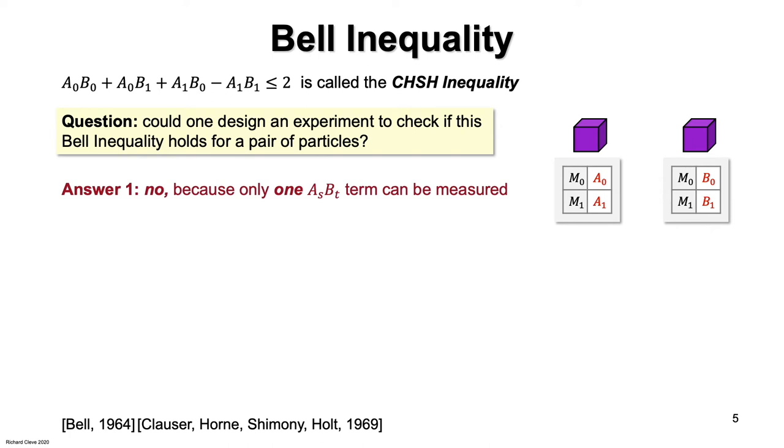And you can choose any one measurement on the second system and get B zero or B one, but not both. So you can only get one AS times BT term, which is plus one or minus one.